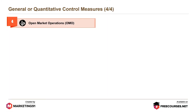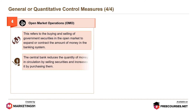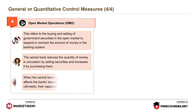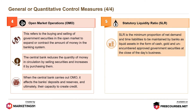The fourth measure is open market operations or OMO. This refers to the buying and selling of government securities in the open market to expand or contract the amount of money in the banking system. The central bank reduces the quantity of money in circulation by selling securities and increases it by purchasing them. When the central bank carries out OMO, it affects the bank's deposits and reserves, and ultimately their capacity to create credit.